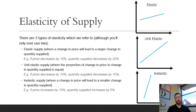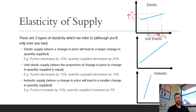Now we're going to look at supply. Once again there are three types — elastic, unit elastic, and inelastic — but with supply lines sloping upwards. With elastic supply, a small change in price leads to a larger change in quantity supplied — for example, price increases by 10% and quantity supplied increases by much more. Unit elastic is proportional — 10% leads to 10%. Inelastic supply is where if price increases by 10%, quantity supplied might only increase by 5%.